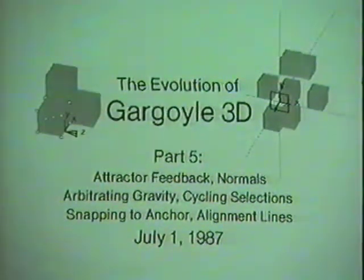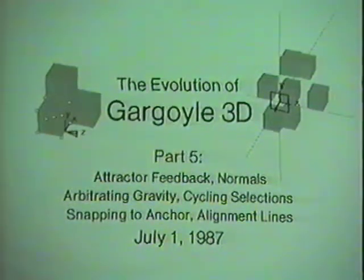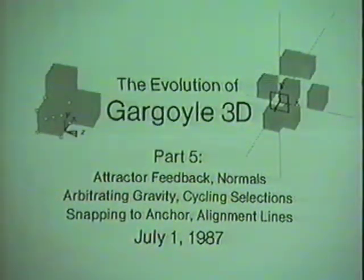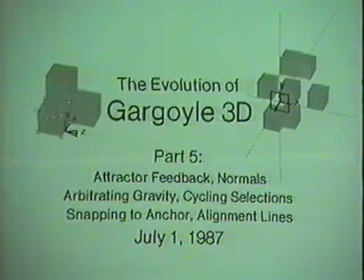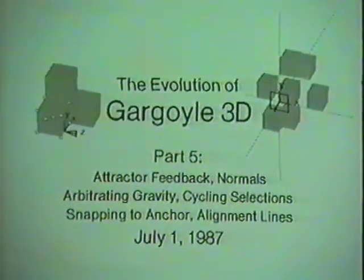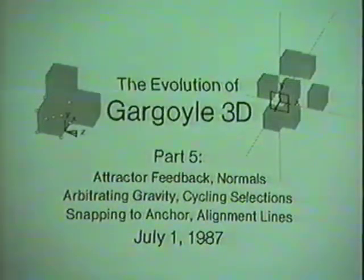This is the evolution of Gargoyle 3D Part 5. In the month since the last section of this series, six important new features were added to Gargoyle 3D. The first four involve what you see when you snap the skitter to objects, and the last two involve some new types of things for the skitter to snap to.